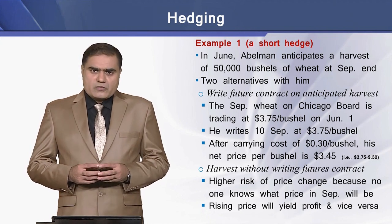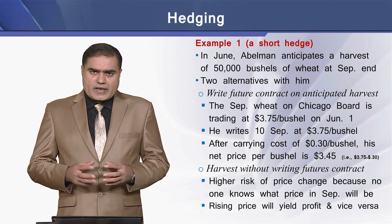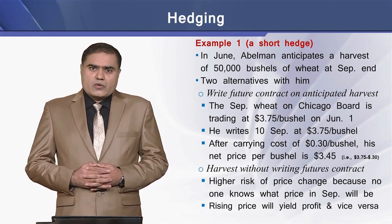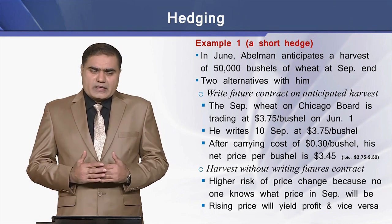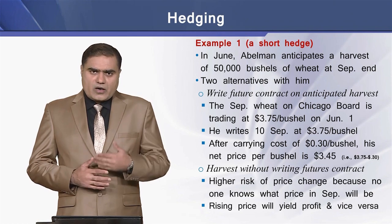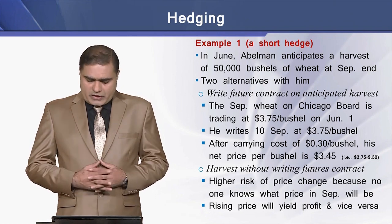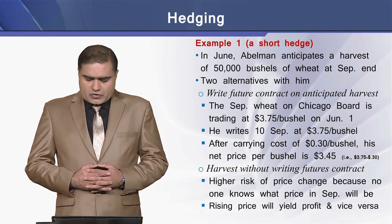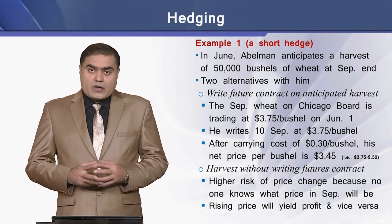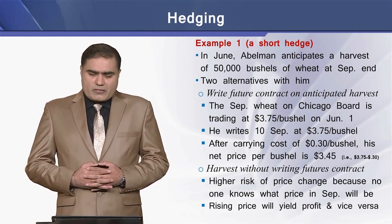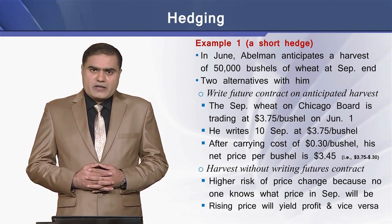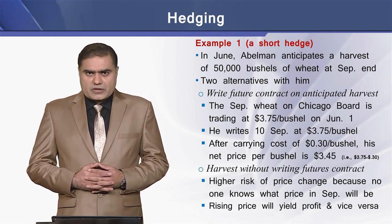Now we assume that there is a carrying cost of $0.30 per bushel, so after deducting this carrying cost, the net earning of Abelman would be equal to $3.45 per bushel. The second option for Abelman is that he can harvest without writing any future contracts.